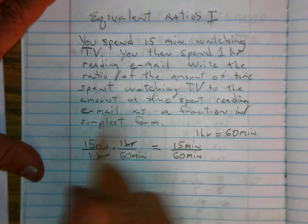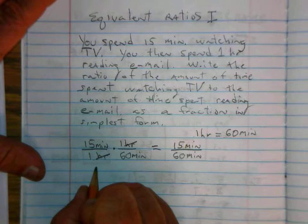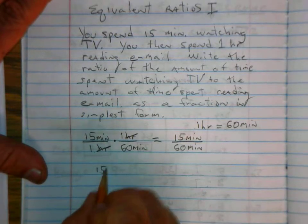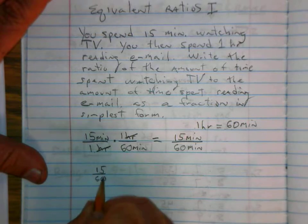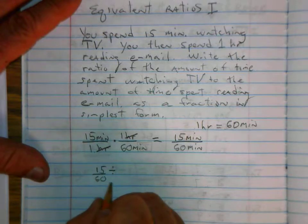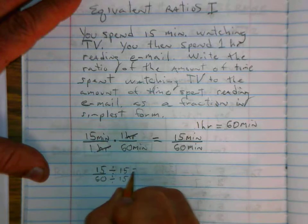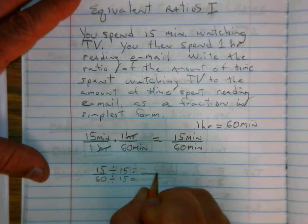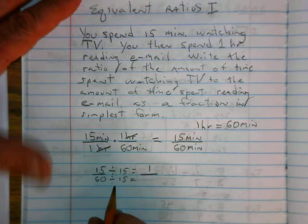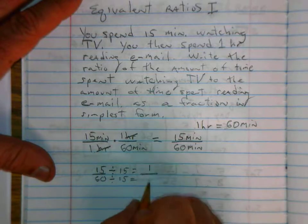We've written it as a fraction, but now we have to get it in simplest form. So I'm going to take 15 over 60. If I divide the top and the bottom by 15 — 15 divided by 15 is equal to one. And we know there are 15 minutes in a quarter of an hour, so 60 divided by 15 is four.